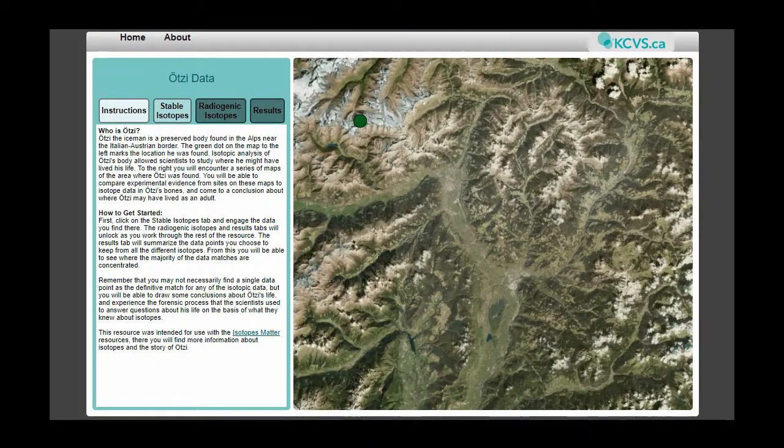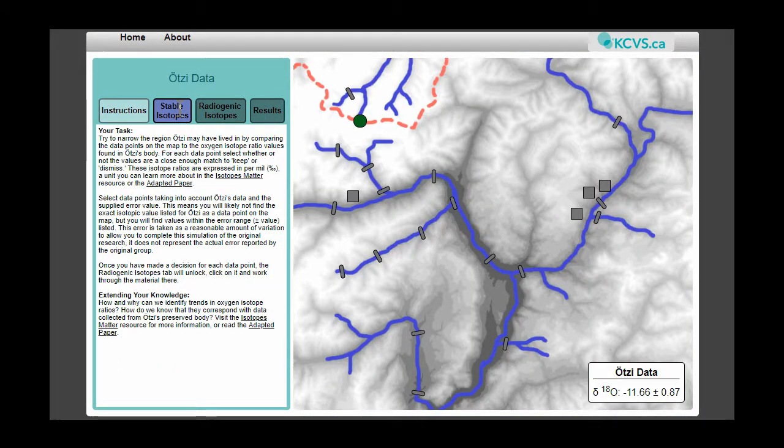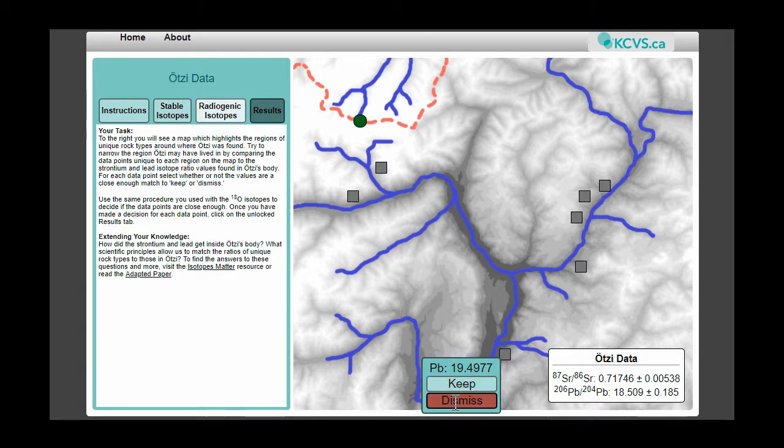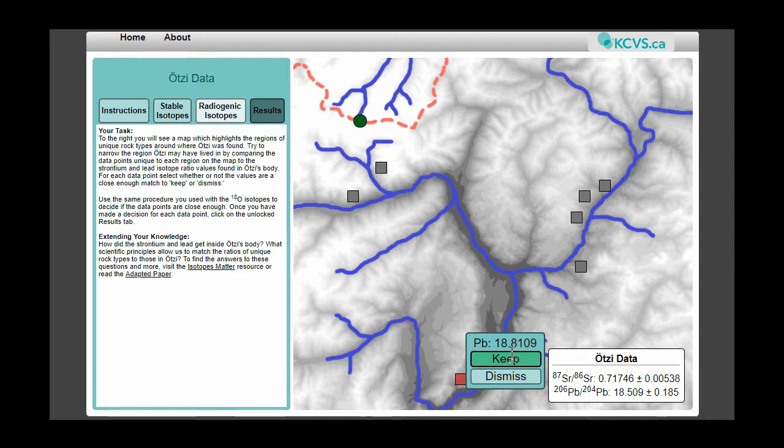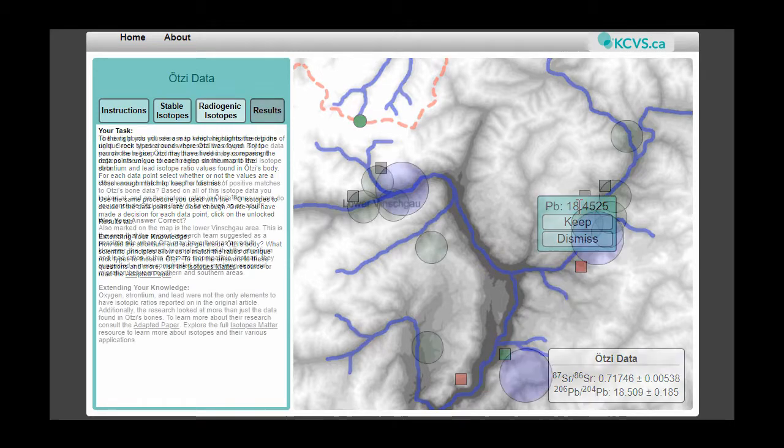Finally, another important applet is the UTSI learning tool, which uses the variation in atomic weights of some elements to track the life of UTSI, a 5,300-year-old mummy found in the Alps in Europe. Analysis of the isotopic composition of oxygen, lead, and strontium atoms in the mummy can be compared to the isotope ratios of materials in different regions on an interactive map. Users can use this data to determine where UTSI lived and compare their conclusions with the public scientific literature.